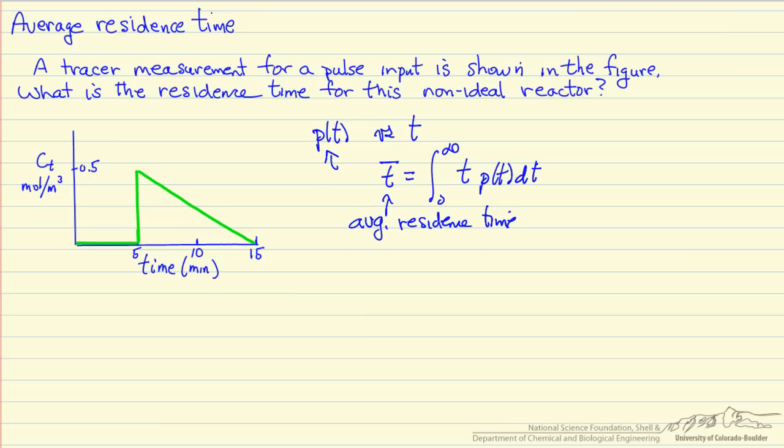So the tracer plot, to normalize it, the integral of the residence time distribution should be 1 because this is a probability of how long molecules spend in the reactor, and eventually all the molecules leave. And so to normalize it, what we will do is integrate this tracer concentration as a function of time.